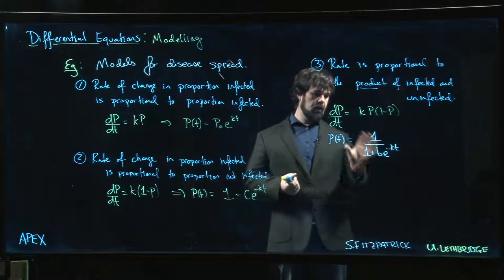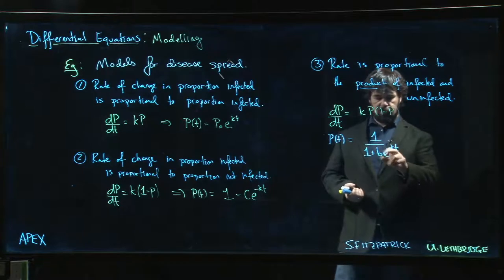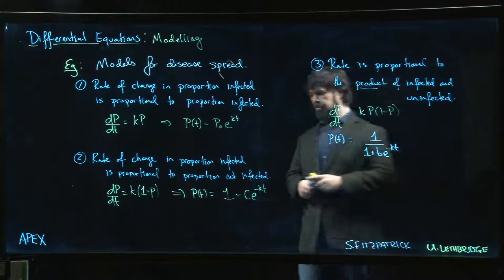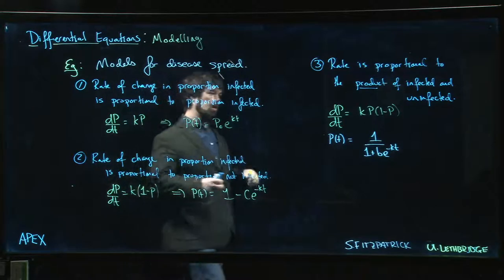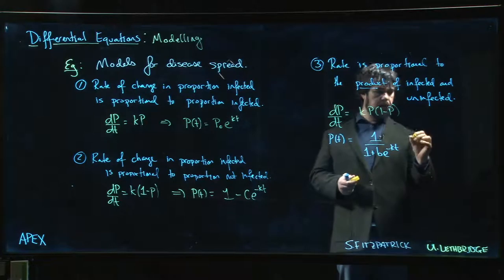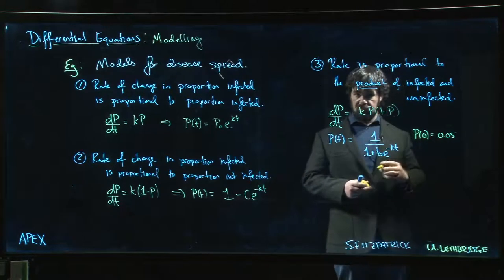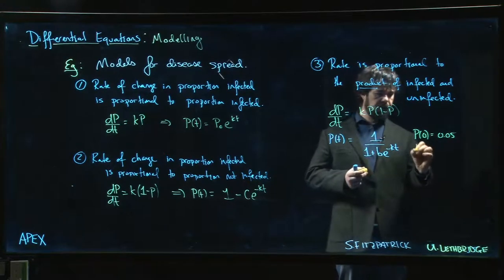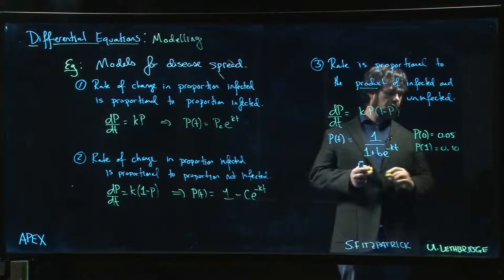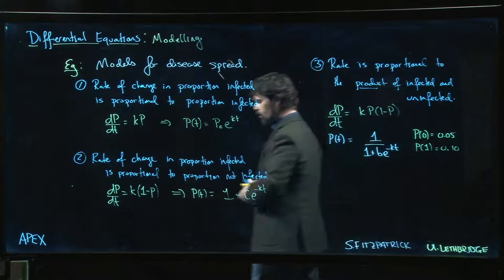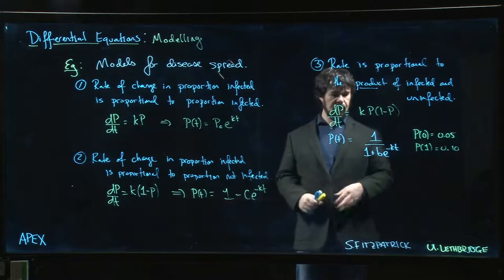We can take given data and fit it to this to figure out the values for b and k. The data that the textbook uses for all three versions of this model are that p of zero is 0.05, so five percent is initially infected, and then after a certain amount of time the proportion hits 0.1, so 10 percent.